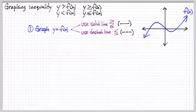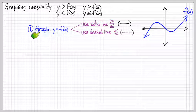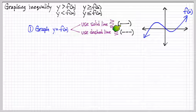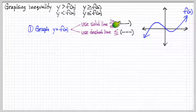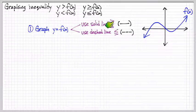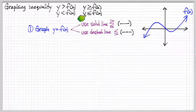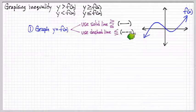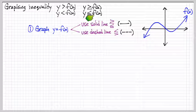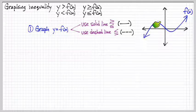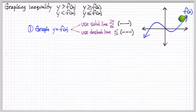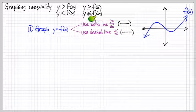So, if we have a function f of x, we start by graphing the function itself, but we use a solid line if we have a greater than or equal or less than or equal, because the solid line represents the fact that points on that line will still satisfy this equation, which makes sense. Y is equal to f of x. Anything on this kind of graph curve here on f of x will satisfy this equation.